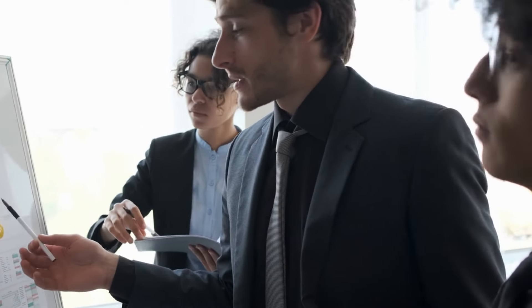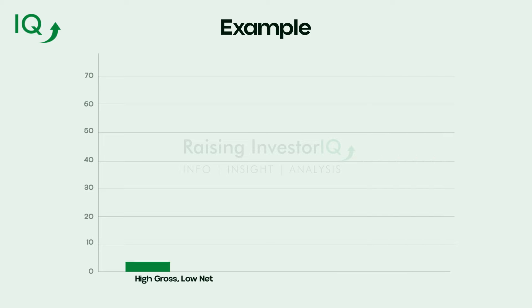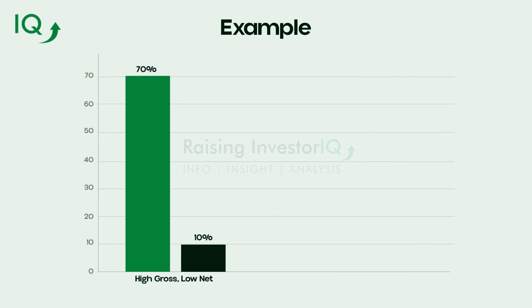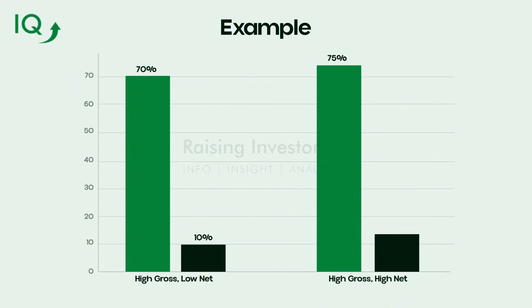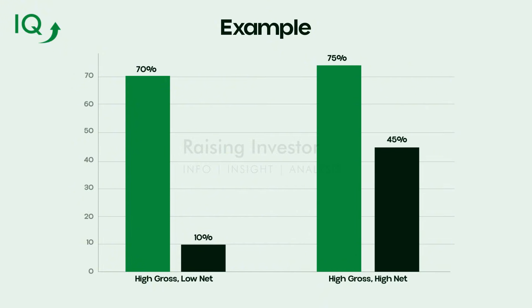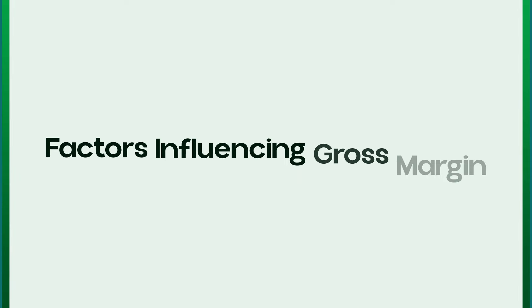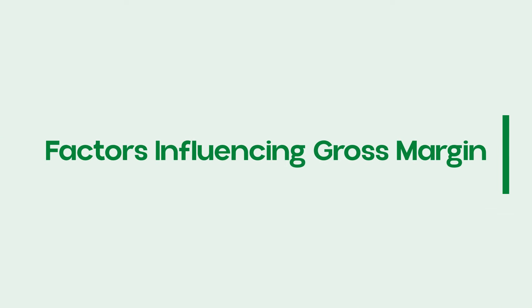As an investor, it's crucial to compare both gross and net margins to get a complete picture of the company's financial health. A company with a high gross margin but a low net margin might be facing high administrative or marketing costs eating into profitability. On the flip side, a company with both high gross and net margins is likely managing both production costs and operational expenses efficiently — a great sign for long-term investors.